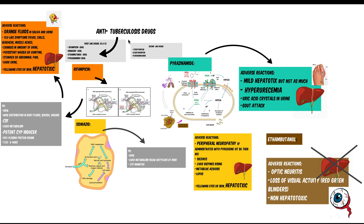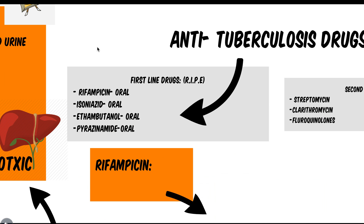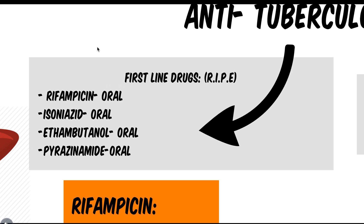Antituberculosis drugs. We have a first line of drugs remembered by the mnemonic R-I-P-E. R stands for rifampicin, I for isoniazid, P for pyrazinamide, and E for ethambutol.